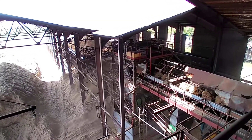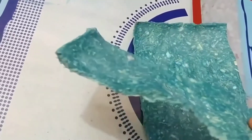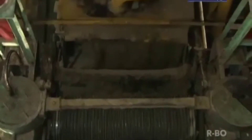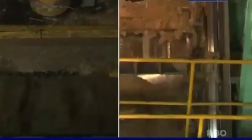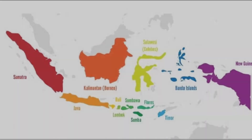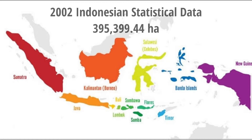Currently, bagasse is mostly used as fuel in steam boilers, as raw material for making paper, or as a source of animal food. In general, sugar factories in Indonesia use bagasse as fuel for their factories. After the bagasse undergoes a drying process, the potential for bagasse in Indonesia is quite large. According to Indonesian statistical data in 2002, the area of sugarcane in Indonesia is...